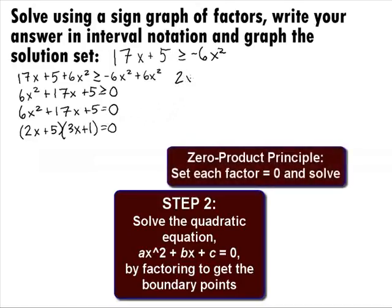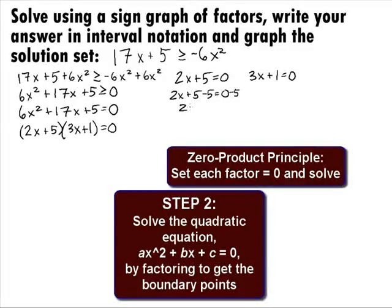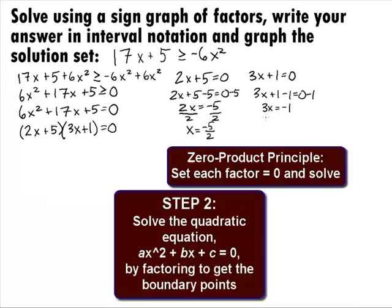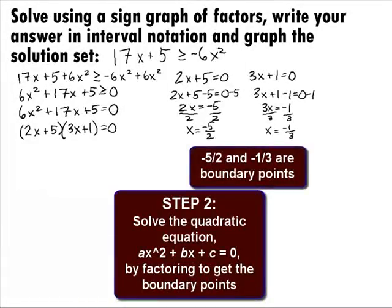Using the zero product principle, we set each factor equal to 0: 2x plus 5 equals 0, or 3x plus 1 equals 0. For the first equation, subtracting 5 from both sides gives 2x equals negative 5, and dividing by 2 gives x equals negative 5 over 2. For the second equation, subtracting 1 from both sides gives 3x equals negative 1, and dividing by 3 gives x equals negative 1 over 3. So we have 2 boundary points: negative 5 halves and negative 1 third.